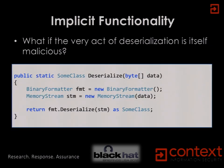But surely the only time that's going to be a problem is when your badly written code does something stupid with the resulting object. It turns out that's not necessarily going to be the case. The framework has mechanisms whereby code will execute during the process of deserialization. You've taken potentially untrusted input and before you've even had an opportunity to stop that deserialization process, you've already been done over.